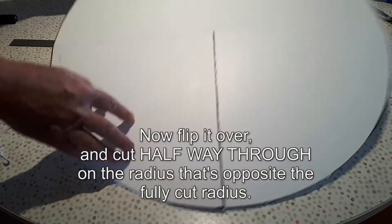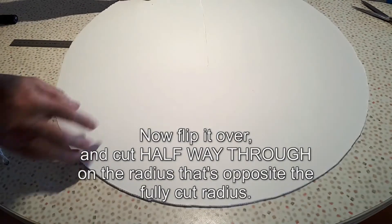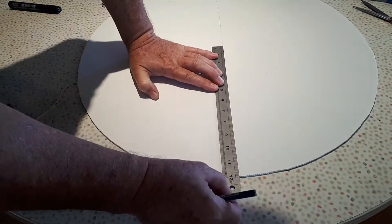Now it's time to flip it over and cut halfway through on the radius that's opposite to that fully cut radius that I did earlier.